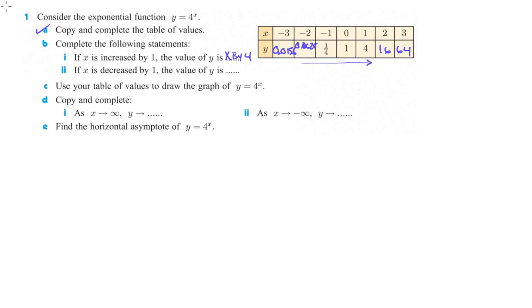Now if x is decreased by 1, the value of y is, so as we're going this way, we're going from 4 down to 1, 1 to 1 fourth. As a fraction, that's going to be 1 over 16, that's going to be 1 over 64. So now we are dividing by 4 each time. So we have done b as well.